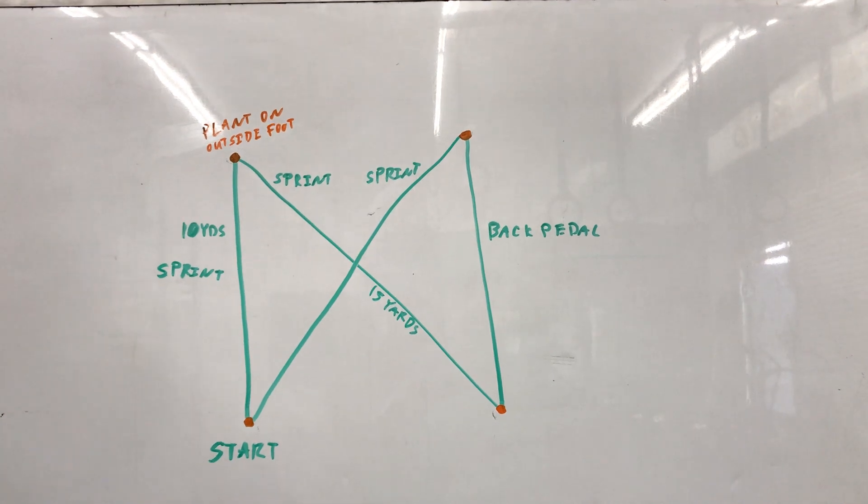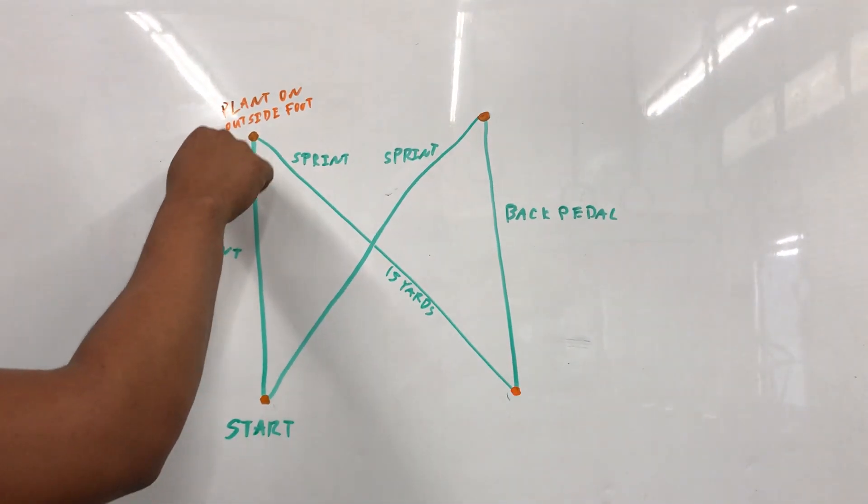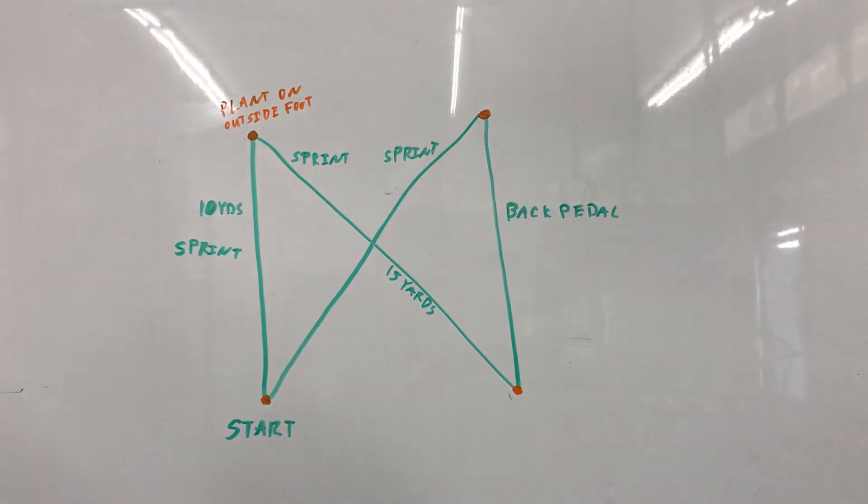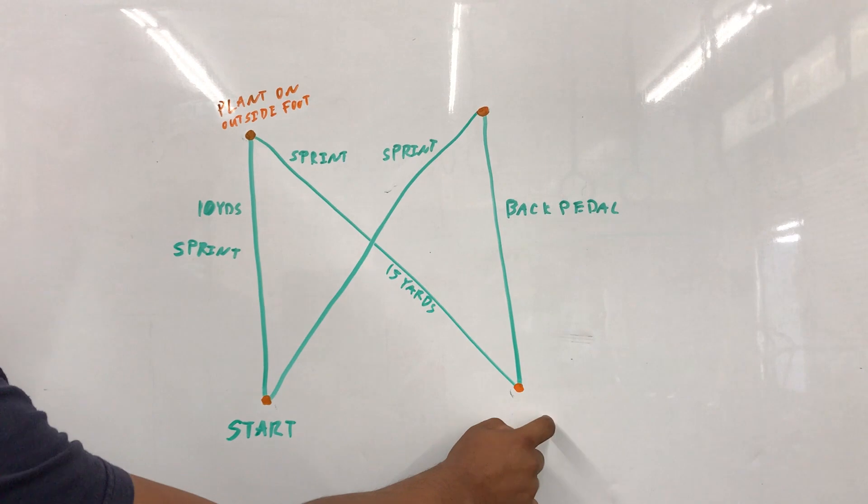15 yards apart. Here's what we're going to do: we're going to sprint from cone one to cone two. As we make our turn, we want to plant on the outside, sprint from two to three. Again, as we turn